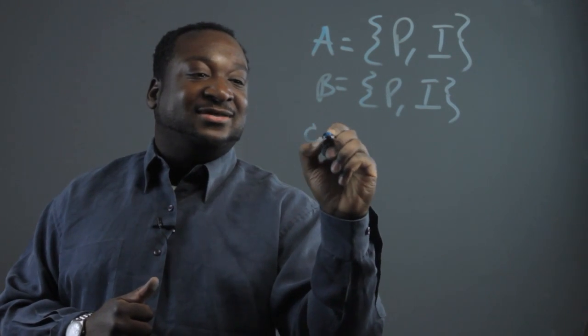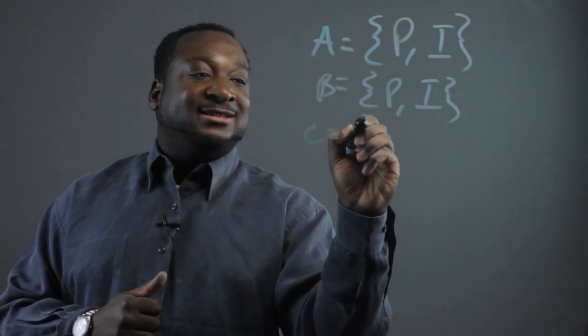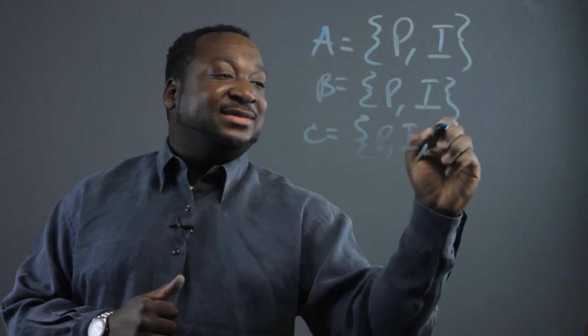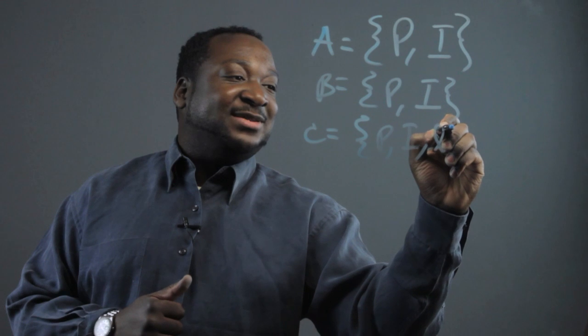And now let's say we have set C, and in set C we have pie, ice cream, and lollipops.